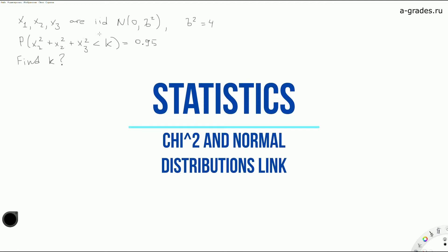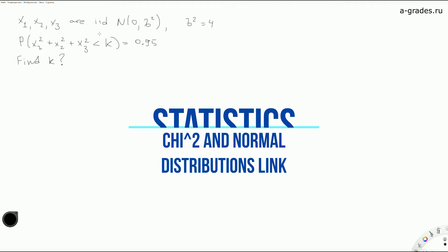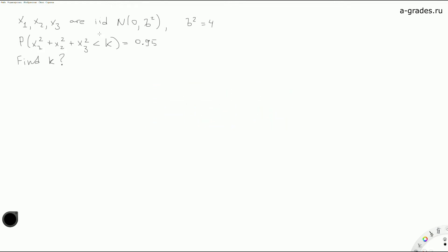Hello everyone, today we are going to solve the following problem. We are given that x1, x2, x3 are normally distributed with variance 4 and 0 mean, and we are given the probability equal to 95%. This probability is about the sum of the squares of these normally distributed variables.